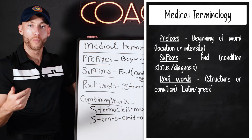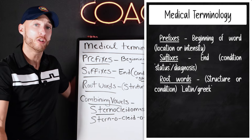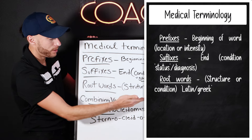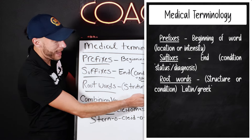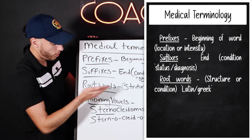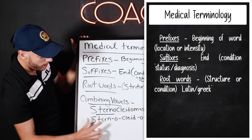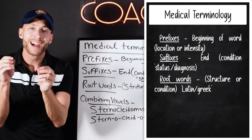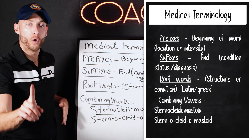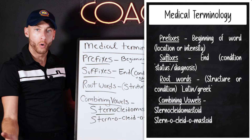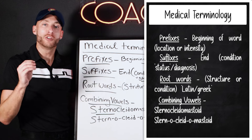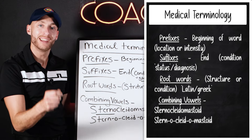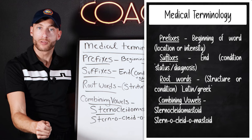Root words deal with your location or the structure. This is where you're going to find the Latin and Greek words under root words. Down here, I want to show you an example of what they mean by combining vowels. The whole goal of combining vowels is to make medical words easier to pronounce.